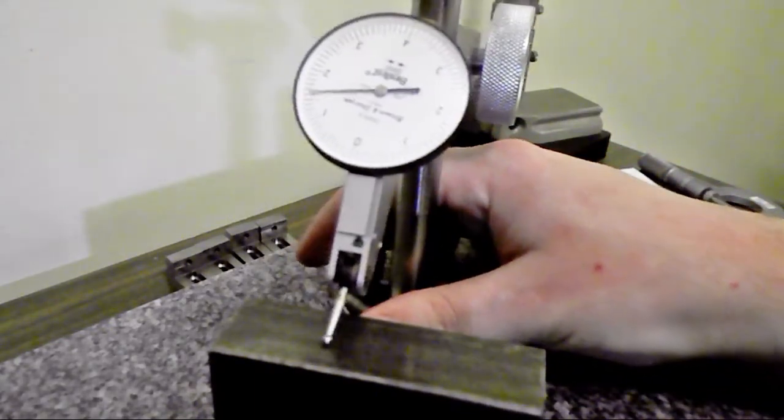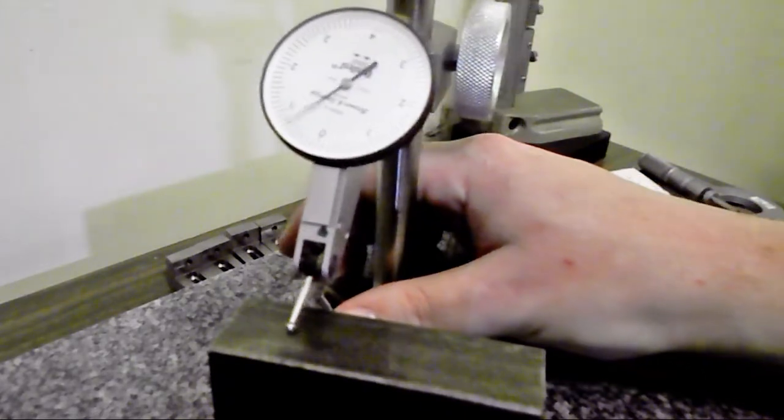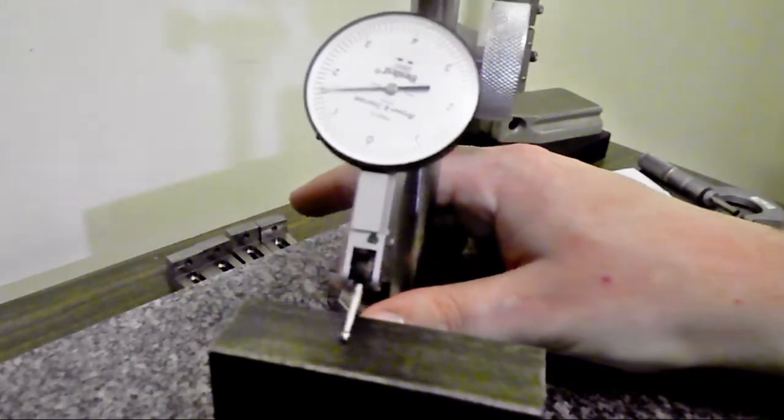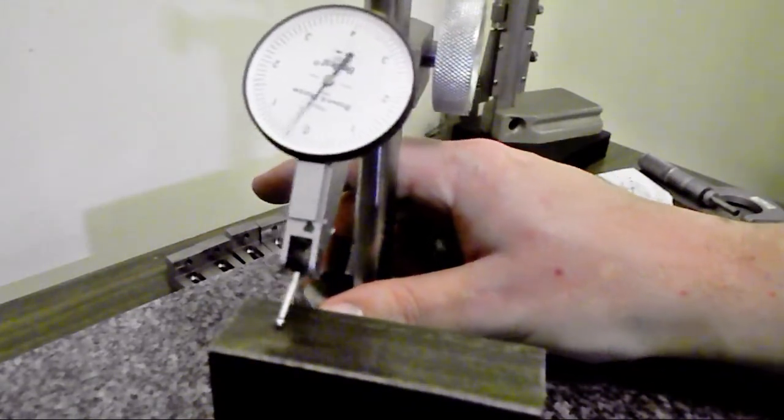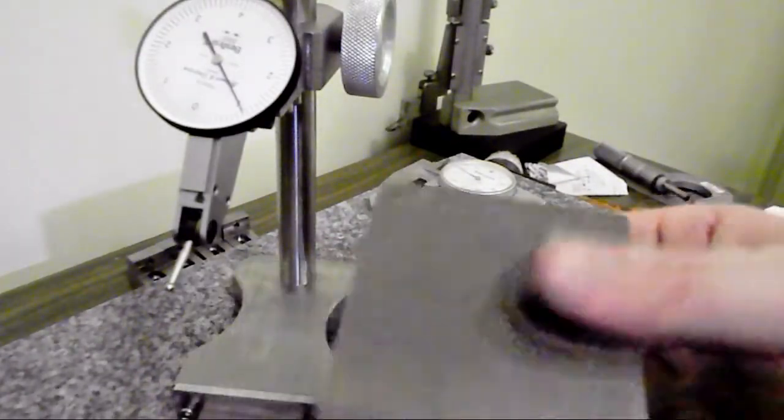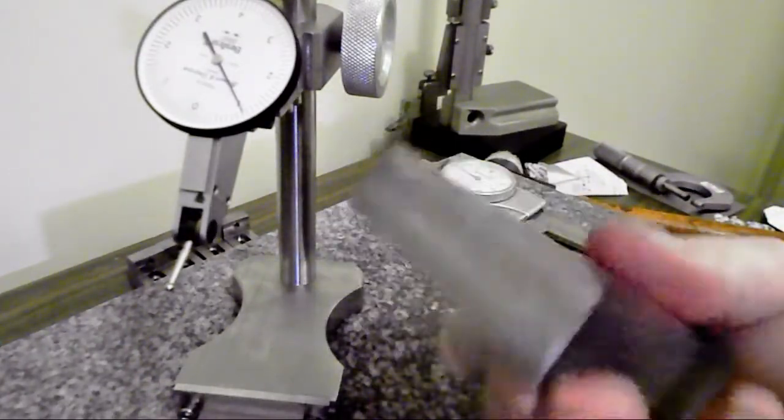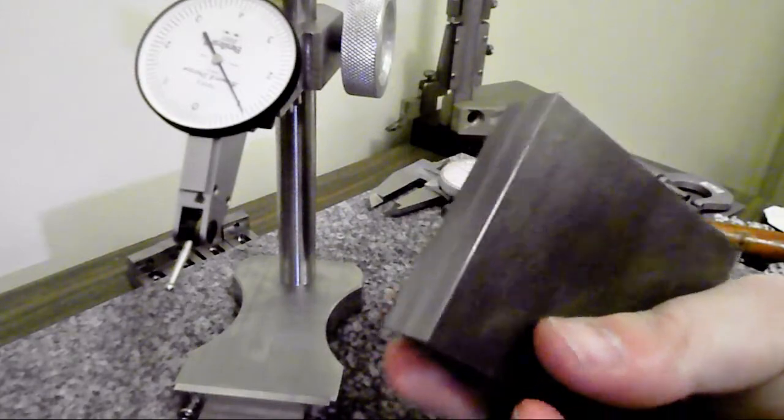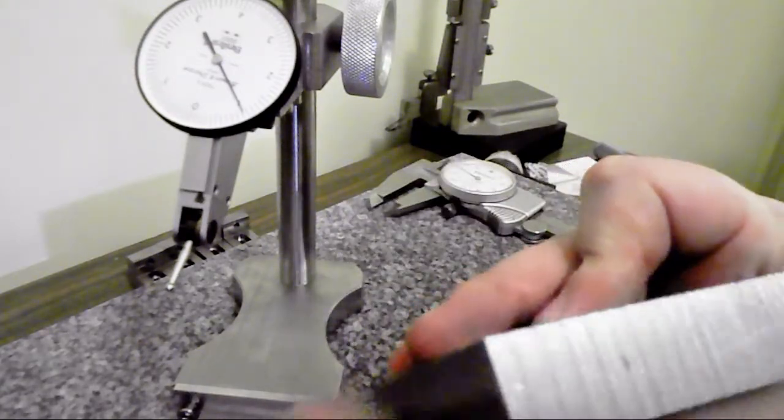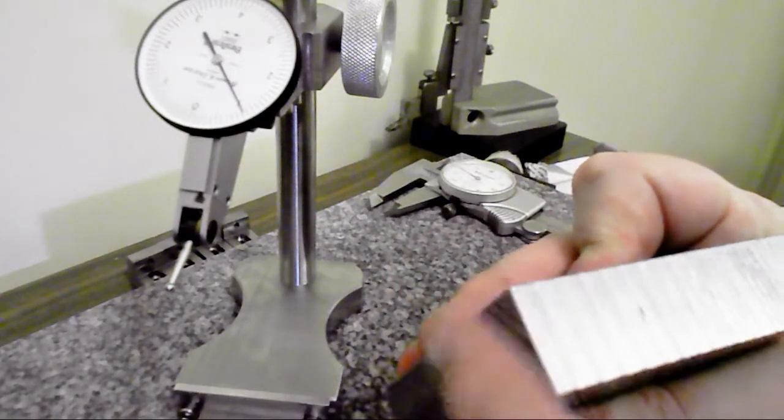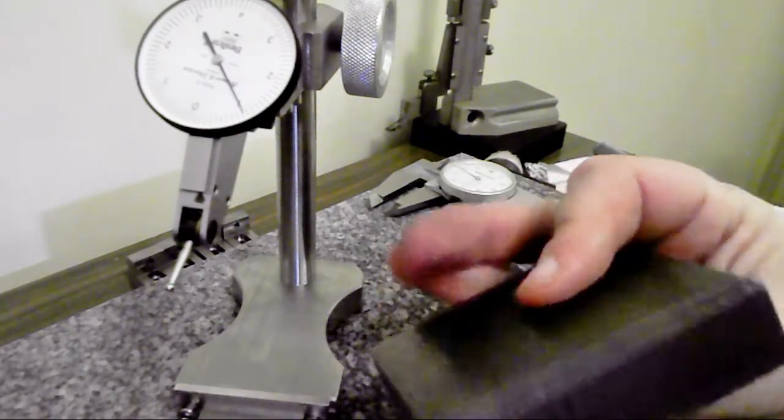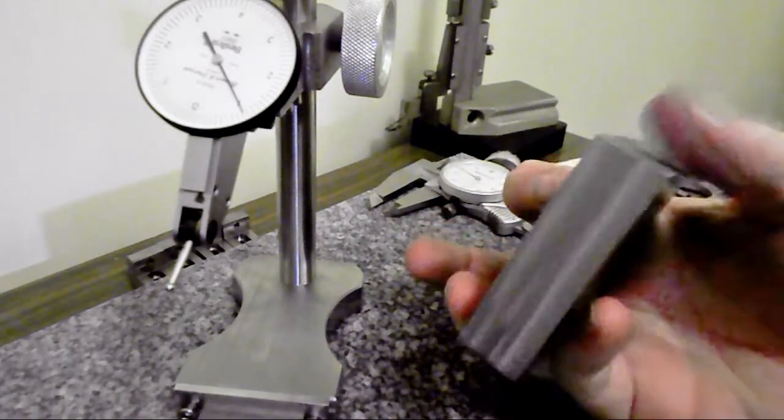My first goal here is to put this back into the machine and get both sides parallel. So, I know that the side opposite of this side, the stock side, is already flat. So, I'm going to put it back in the vise and attempt to get this side sitting square with the back edge. We'll do some indicating in the vise as well.